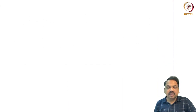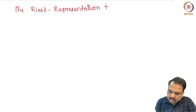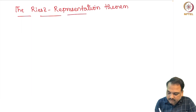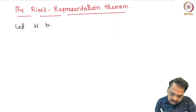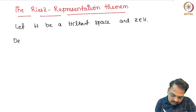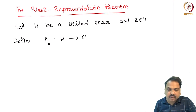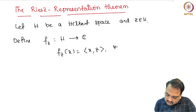Next we discuss another important result: the Riesz Representation Theorem. It describes how a functional on a Hilbert space looks. Starting with a Hilbert space H, let Z be a vector in H. Define F_Z from H to C by F_Z(x) equals the inner product of x with Z, for every x in H. We can easily show that F_Z is linear and continuous.